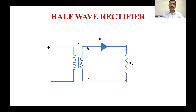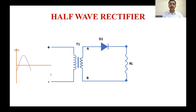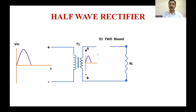This figure shows the half-wave rectification process, where we have a transformer connected to a diode D1 and the load resistance RL. In the positive half cycle, the diode goes into forward bias and the signal is obtained across the load resistance RL, where the diode acts as a closed switch.